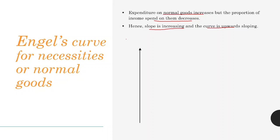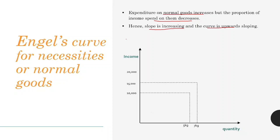On the graph for normal or necessary goods, the y-axis has income and the x-axis has quantity of good purchased. Suppose your income is 10,000 and the quantity purchased was 5 kg; your income increases to 15,000 and quantity purchased is 7 kg; your income is almost double at 20,000 and you purchase only 8 kg. There is more increase in income and less increase in quantity purchased. The slope — change in income divided by change in quantity — goes from 5,000/2 in the first case to 5,000/1 in the second case, showing the slope is increasing as income rises.